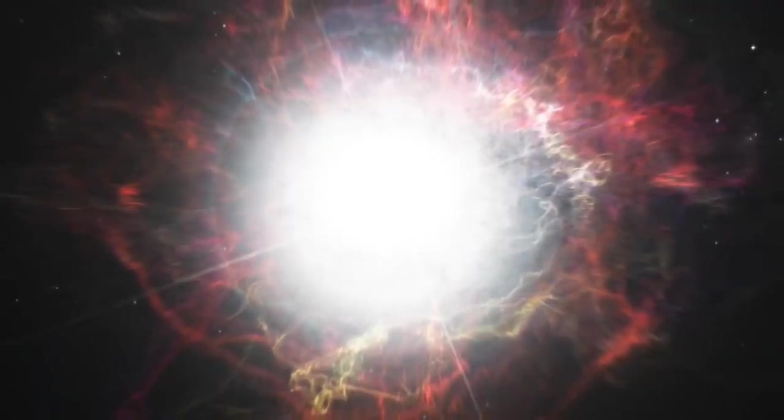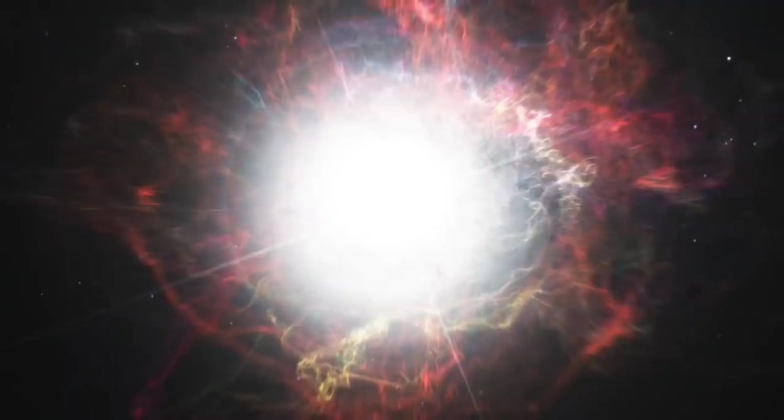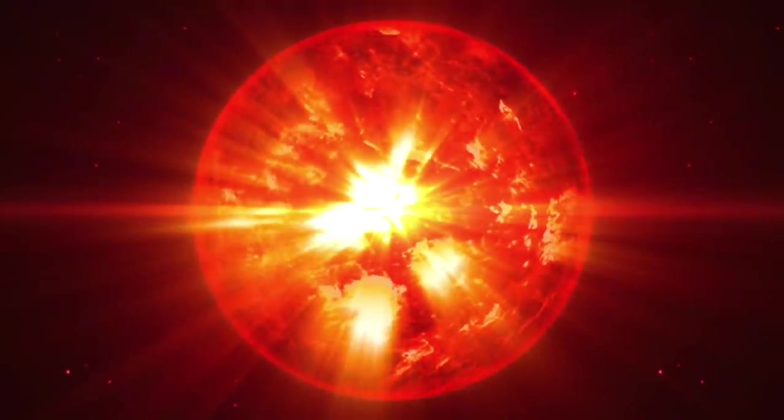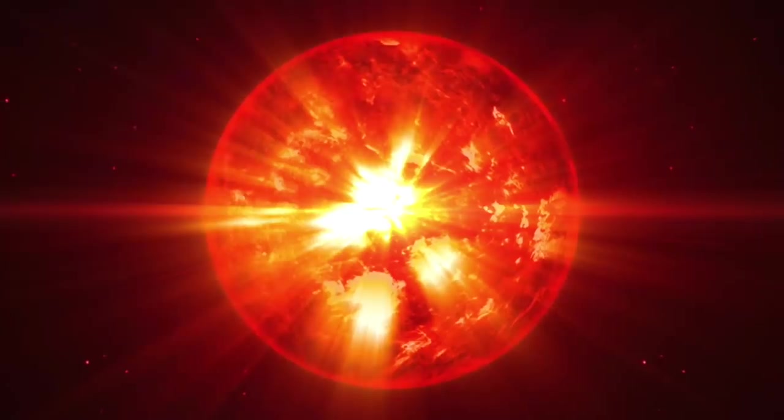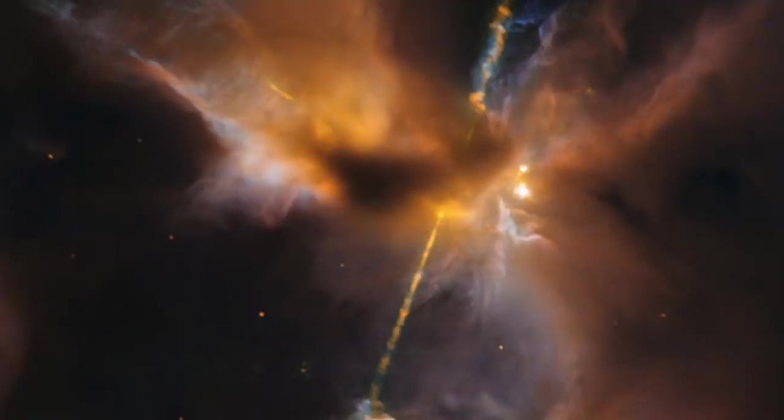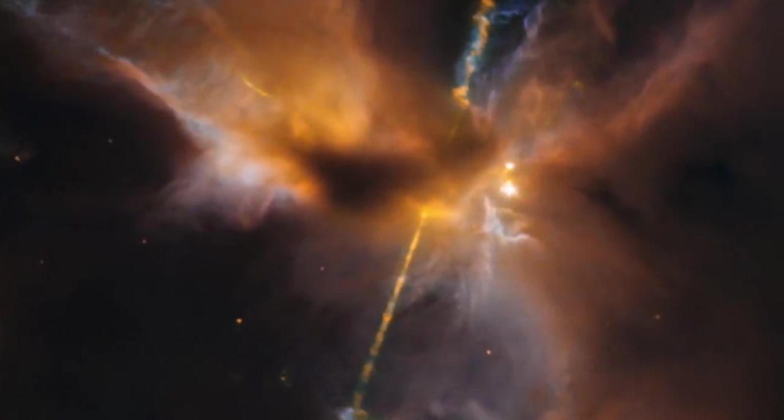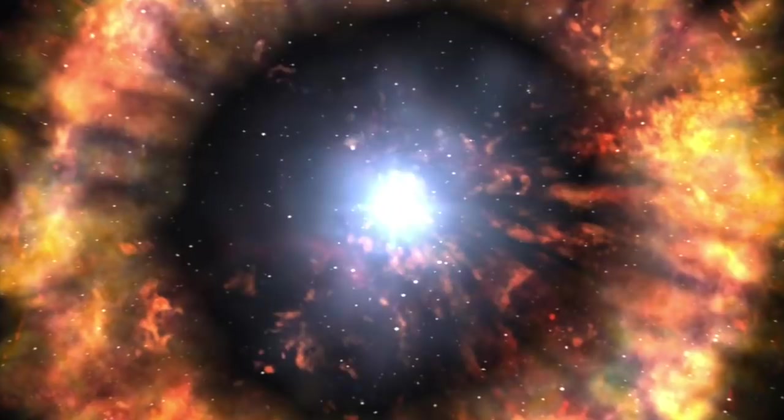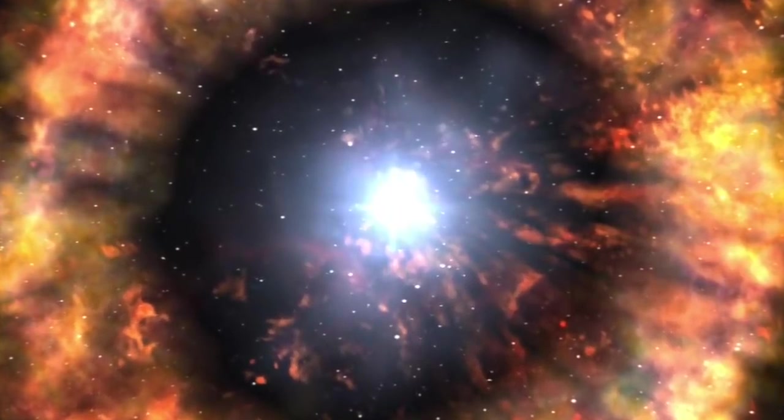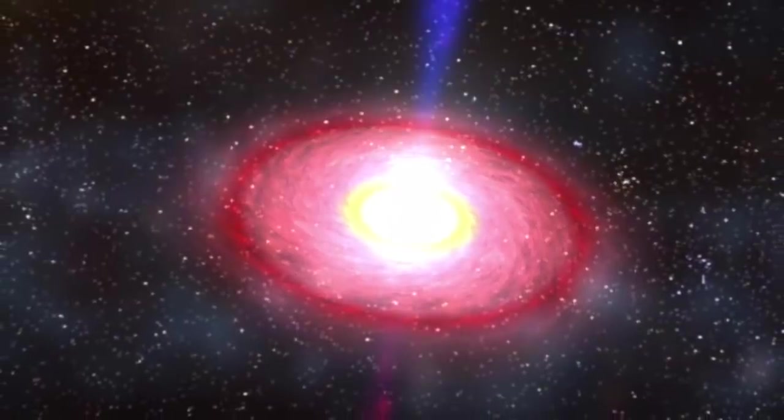Stars do not explode in supernovae because they exhaust their nuclear fuel and then collapse. Rather, a star has internal charge separation as well as electromagnetic energy stored in its equatorial ring, and it ejects matter in the form of electrical discharges, as seen in a star's bipolar jets, or catastrophically in the form of a supernova.